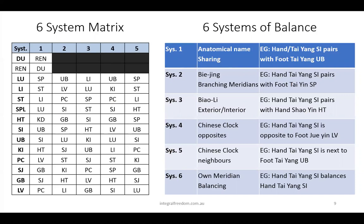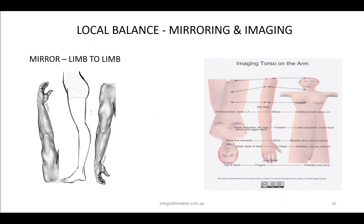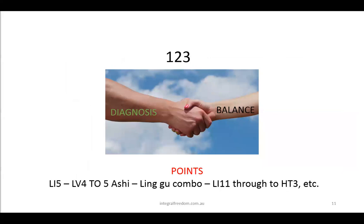The six systems are used in local balance through the principles of mirroring and imaging. Again, if you're not familiar with these, find the Foundation training or contact me. This forms the basis of the one-two-three approach, which is Diagnosis, Balance, and Points.